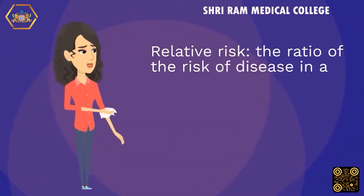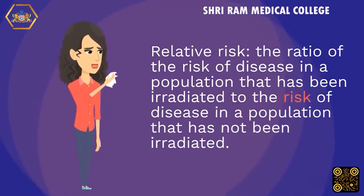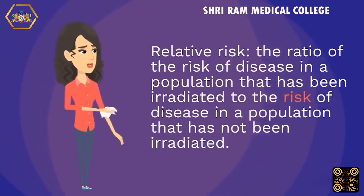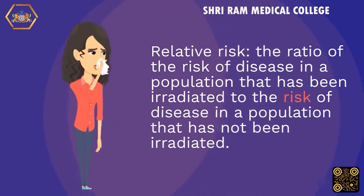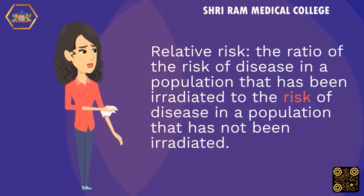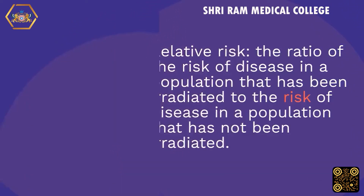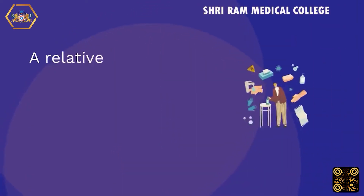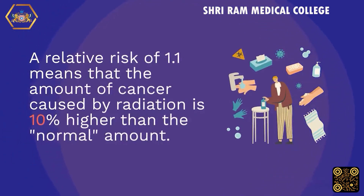Relative risk: the ratio of the risk of disease in a population that has been irradiated to the risk of disease in a population that has not been irradiated. A relative risk of 1.1 means that the amount of cancer caused by radiation is 10% higher than the normal amount.